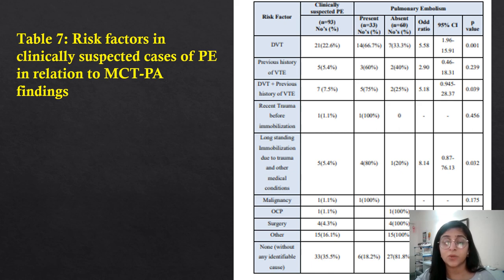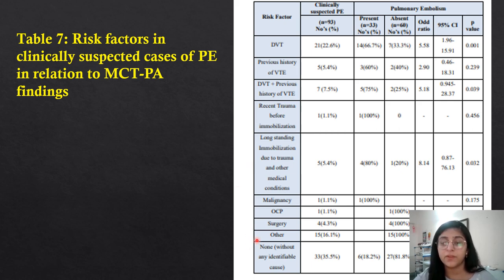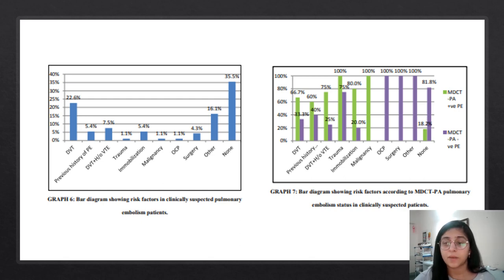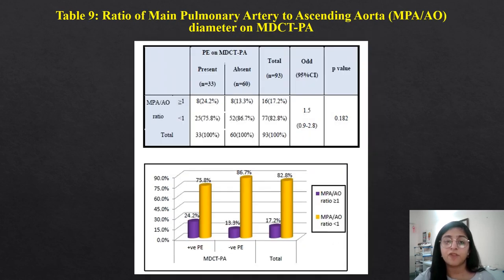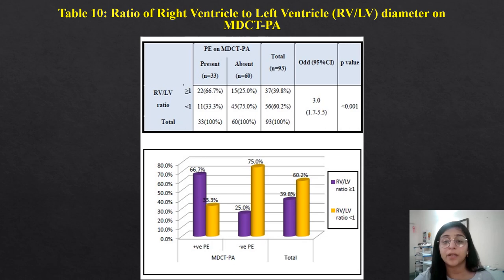Risk factors in clinically suspected cases were also tabulated. The major risk factors were DVT, and increasingly, a history of COVID-19 pneumonia. Recent trauma with immobilization or long-standing immobilization due to trauma were also significant. Other risk factors with reduced percentages were malignancy, OC pills, surgery, and others. The anatomical distribution of pulmonary embolism location showed the majority in segmental arteries at 90.9% and subsegmental arteries at 87.9%. The ratio of main pulmonary artery to ascending aorta diameter and the ratio of right ventricle to left ventricle diameter were also calculated and tabulated.